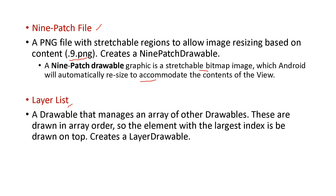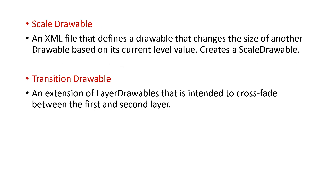Another drawable type is layer list — a drawable that manages an array of other drawables. Next is scale drawable, in which the size of another drawable is changed based on the current level value — you can change the size dynamically. Next is transition drawable, intended to cross-fade between a first and second layer — the first layer gradually fades while it slowly transitions to the second layer.